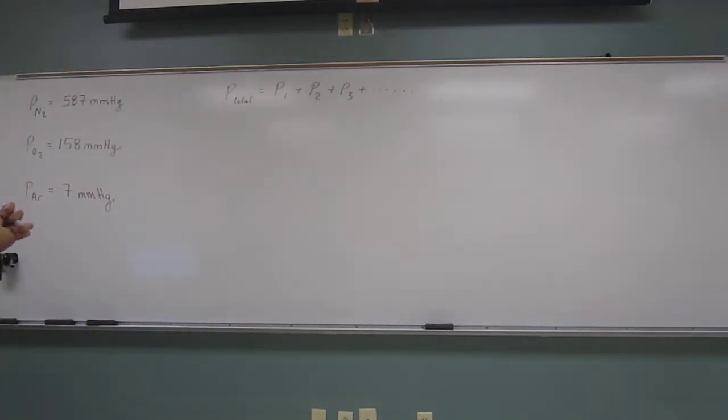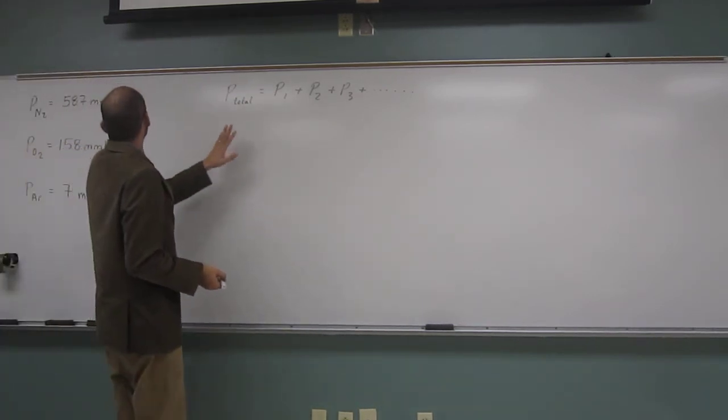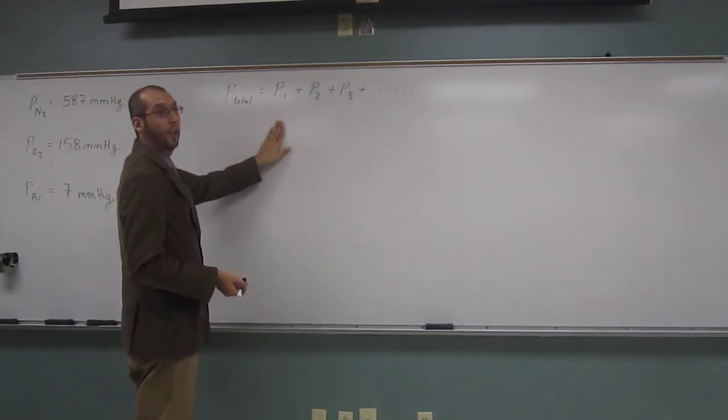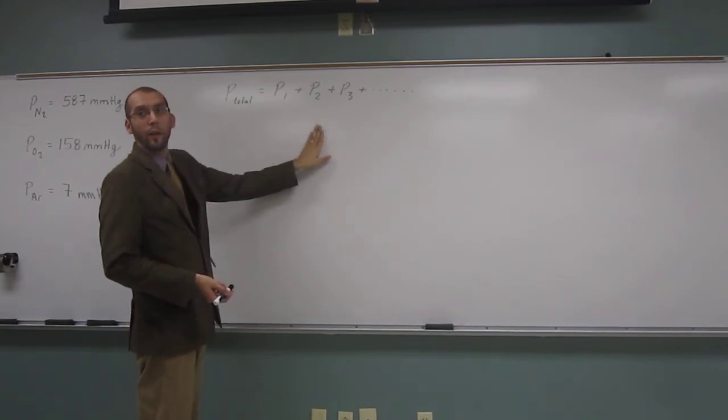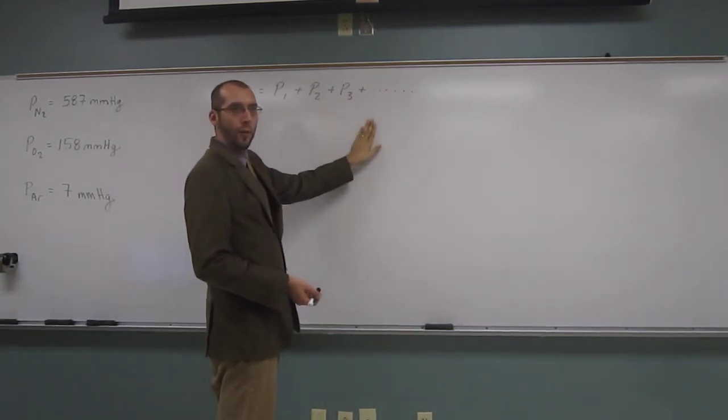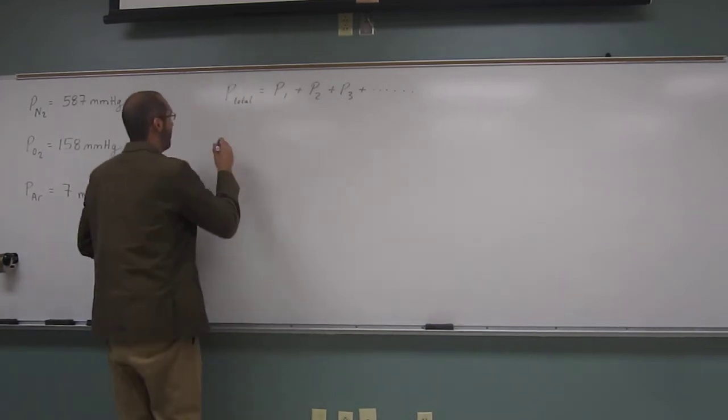So how many pressures do we have here? Just 3, right? So the total pressure is going to be the pressure of nitrogen plus the pressure of oxygen plus the pressure of argon. Let's write that down.